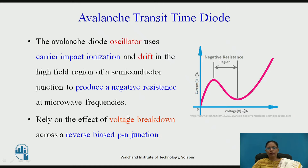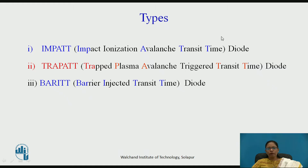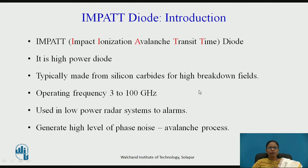Avalanche transit time diodes use the effect of voltage breakdown — the avalanche effect — as well as the effect of transit time. There are types of avalanche transit time diodes: one is the IMPATT diode, which stands for Impact Ionization Avalanche Transit Time diode; TRAPATT, which is Trapped Plasma Avalanche Triggered Transit Time diode; and BARITT, which is Barrier Injected Transit Time diode.